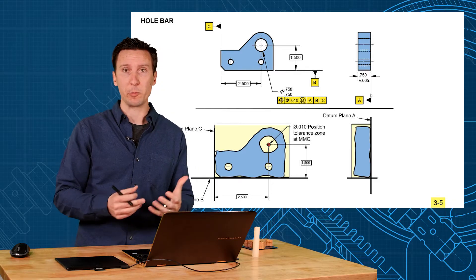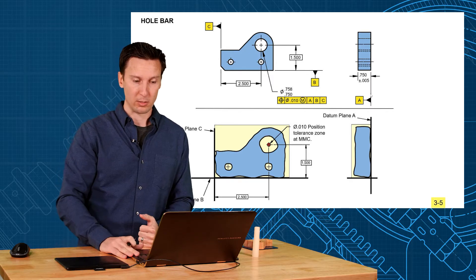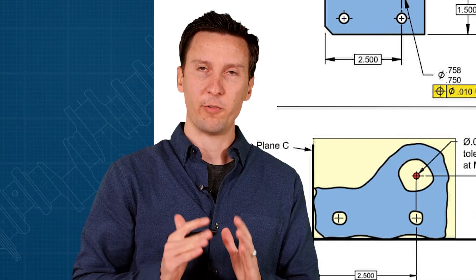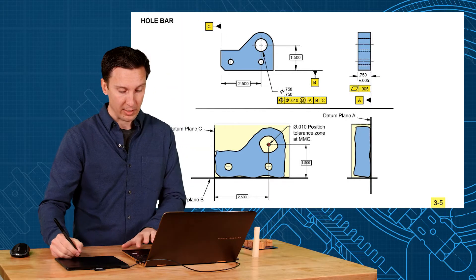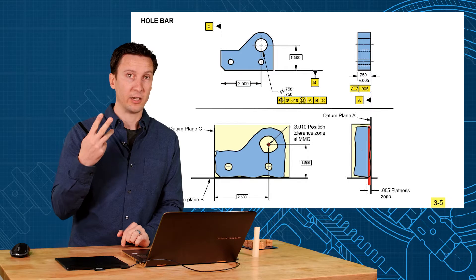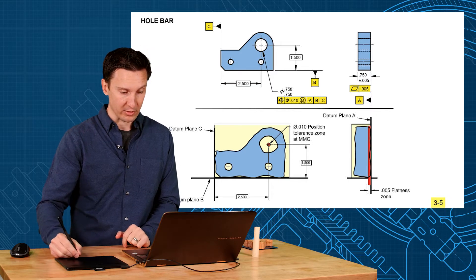So what symbol would we put on A to make sure it's a nice surface? Probably said flatness tolerance. Flatness is pretty simple. Two parallel planes, five thousandths apart, and that's going to control the concave, convex, and waviness variations on that surface.